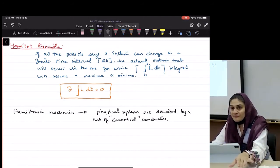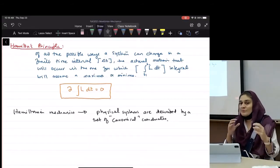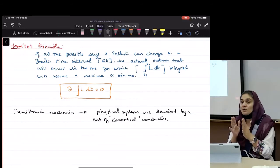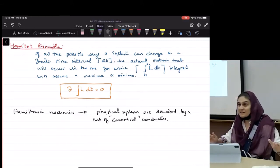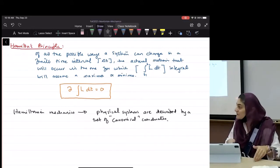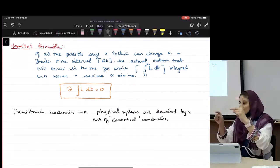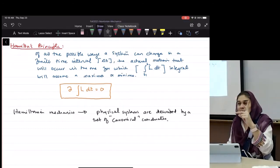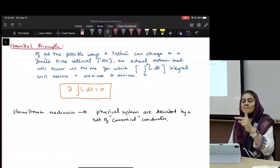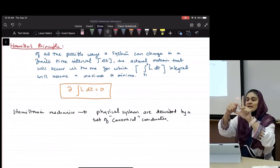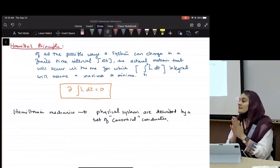Canonical coordinates is a fancy way of saying the number of coordinates that we need in order to describe any system. That's all that means. So for example, if there is a particle, a cart moving in a straight line, how many coordinates you need to know in order to define the system? One, which one? X, that's it. So the canonical coordinates for that particular system is x. Now if I have a projectile motion that goes like this in 2D, how many canonical coordinates do I need? Which ones? X and y, got it?